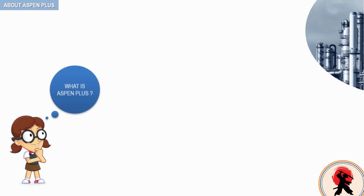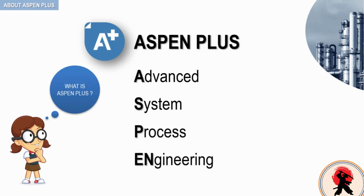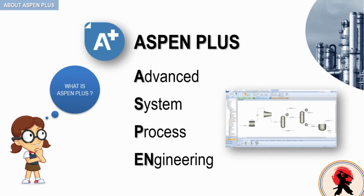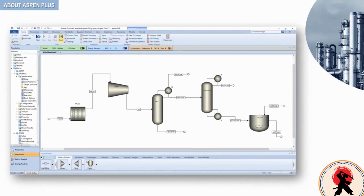ASPEN PLUS stands for Advanced System for Process Engineering. It is based on a flow sheet simulation. A flow sheet simulation is a computer software that is used to model a chemical processing plant, which, in addition to the core reactor unit, also includes pre- and post-treatment steps.